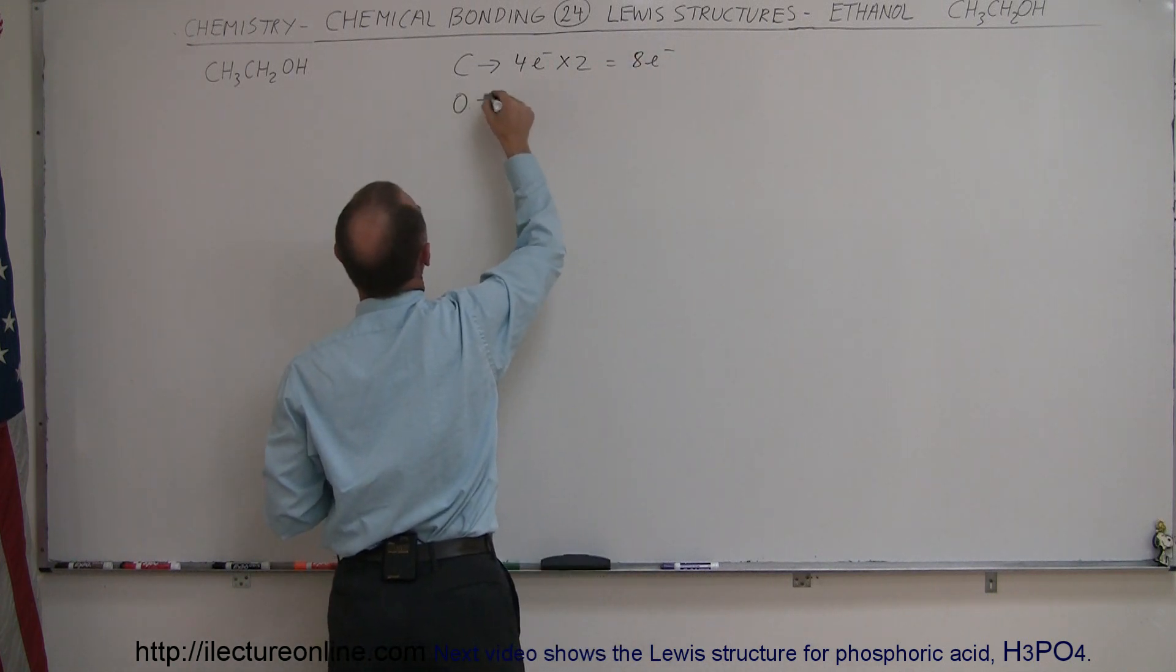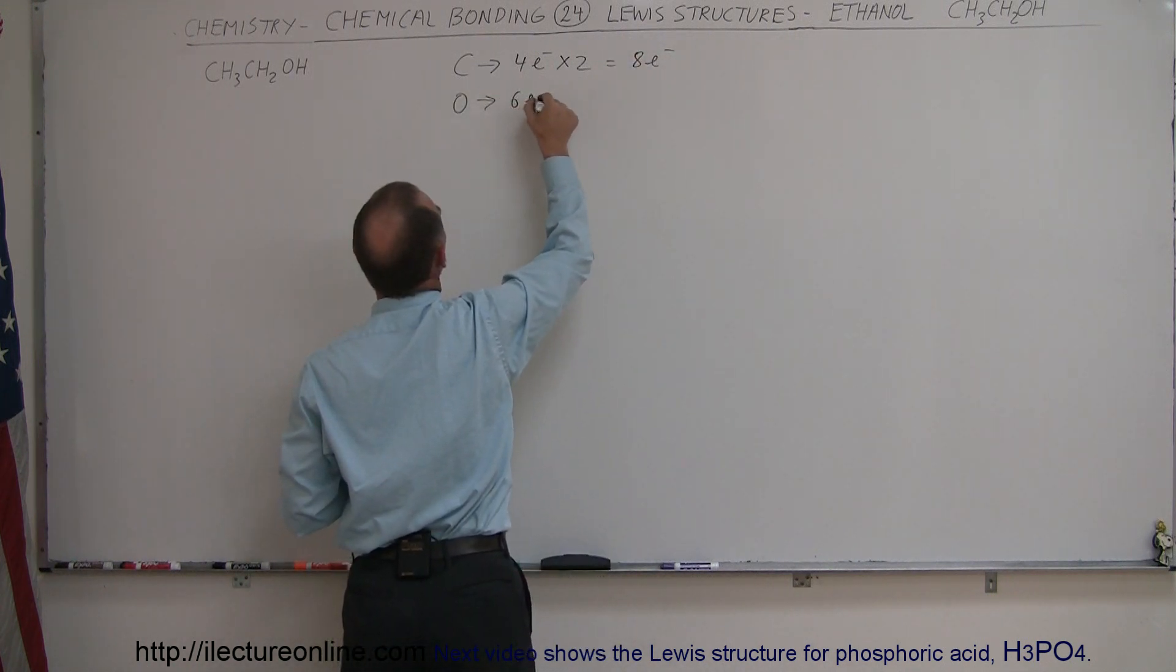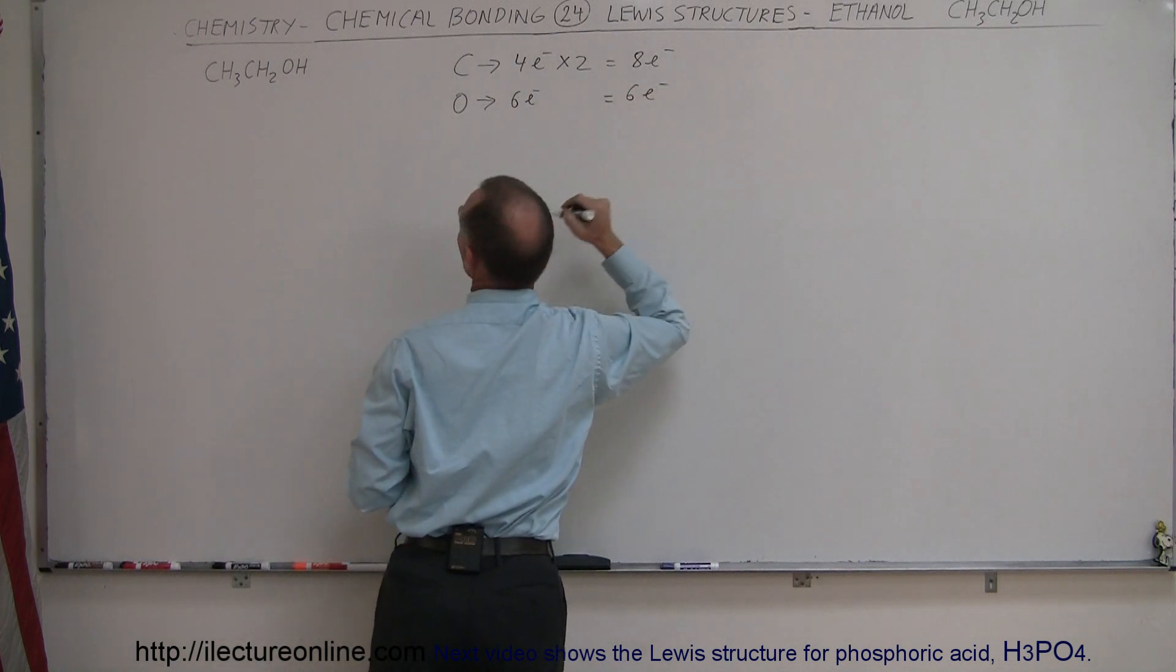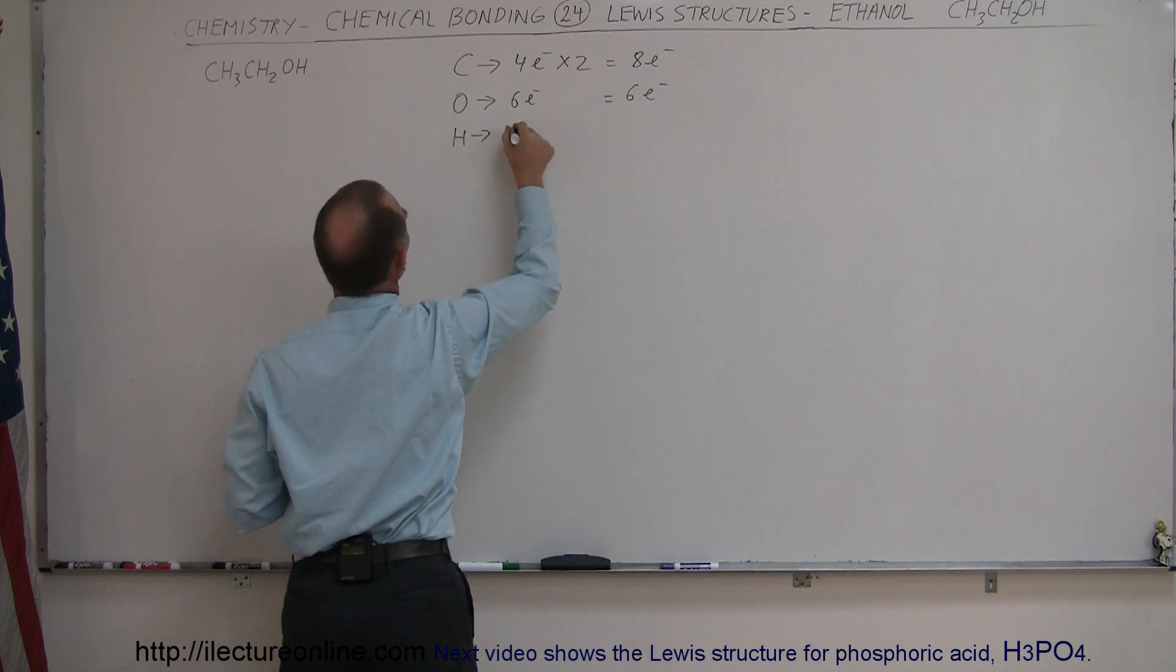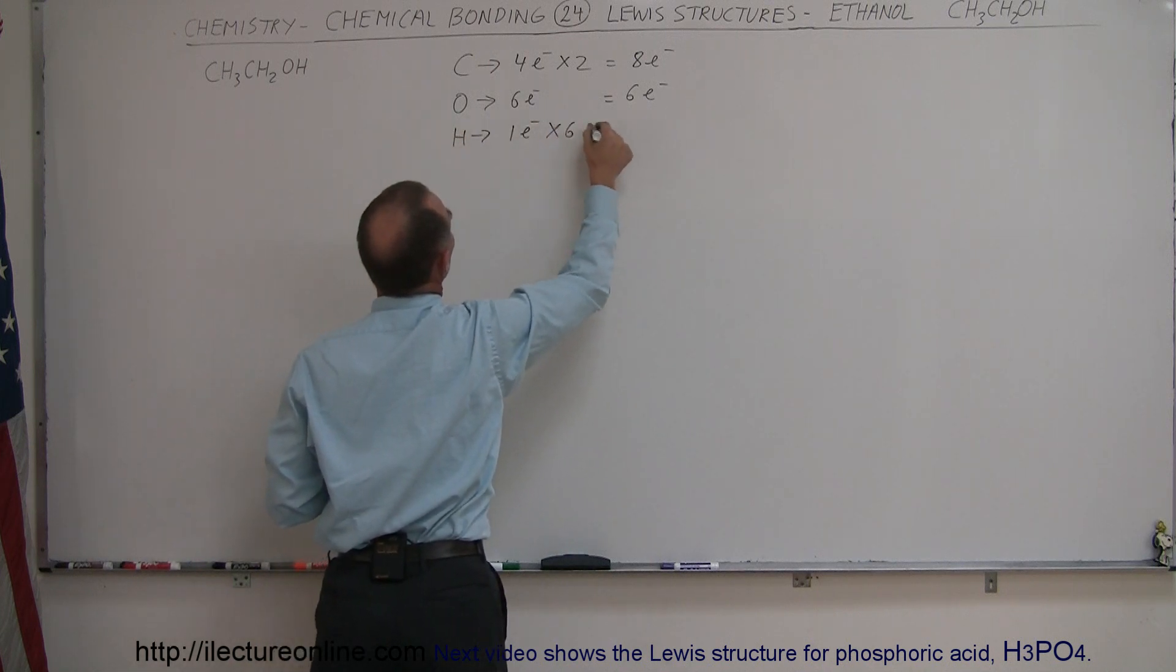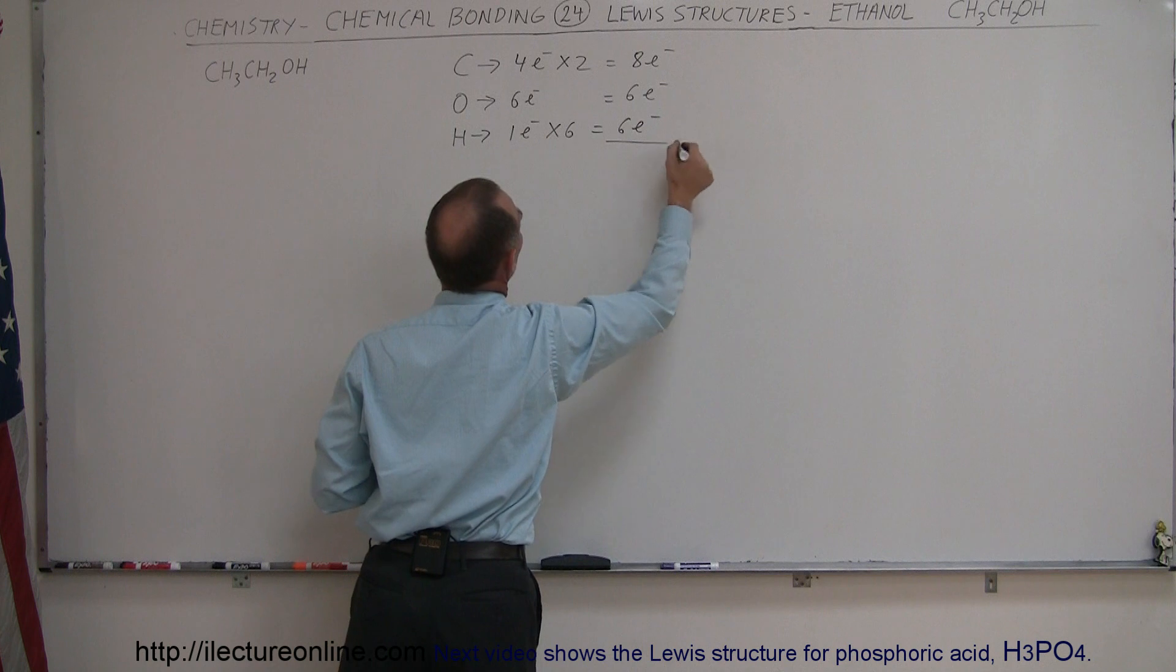We have one oxygen, which has six valence electrons. And how many hydrogens do we have? We have six hydrogens. For each hydrogen, we have one valence electron times six, which is six valence electrons.